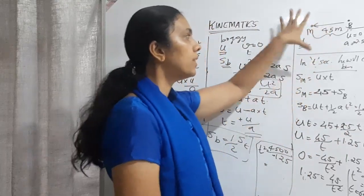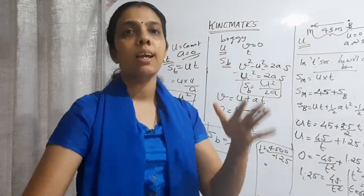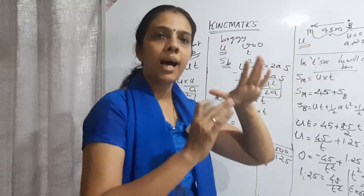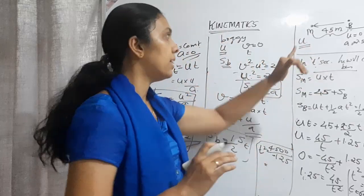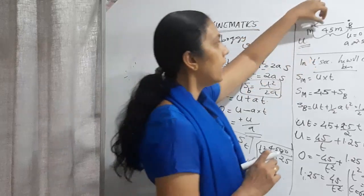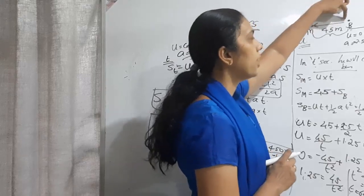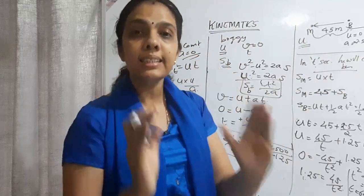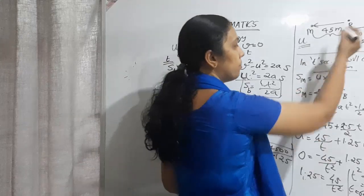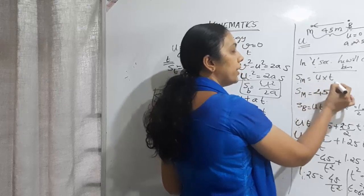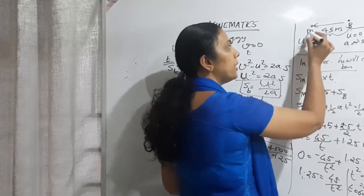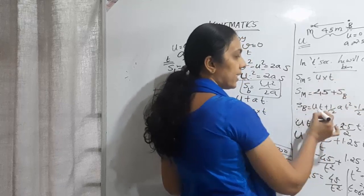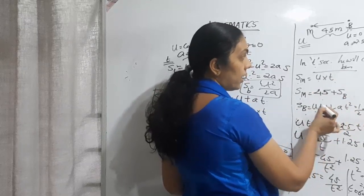To summarize: since it is minimum velocity and the man moves at constant velocity, we differentiate u with respect to t and set it to zero. The bus starts from rest, so its distance is ½at². We equate u·t = 45 + ½a·t², getting u as a function of t. Then differentiating and setting to zero gives the time when velocity is minimized.